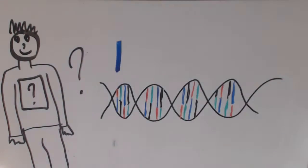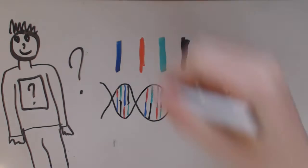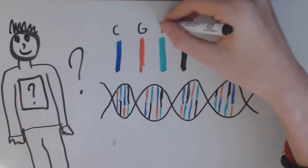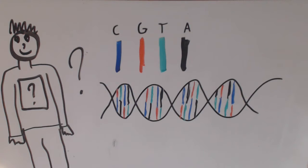Now, this strand is composed of four chemical bases. Cytosine, guanine, thymine, and adenine, which bond with each other to create our genes.